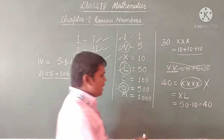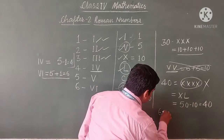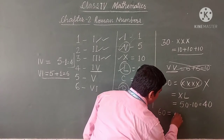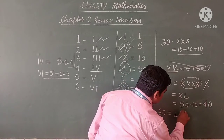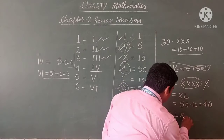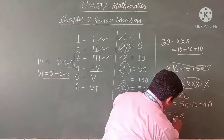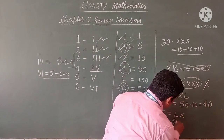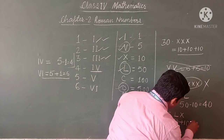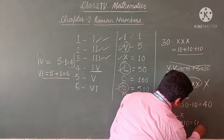If we have 60, we write LX. X is written after L, so we add: 50 plus 10, which is 60.